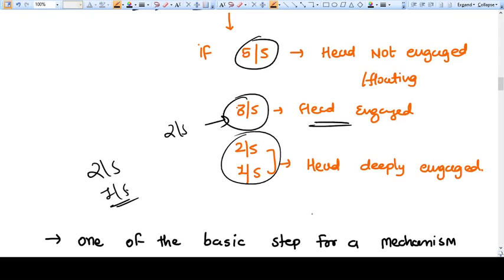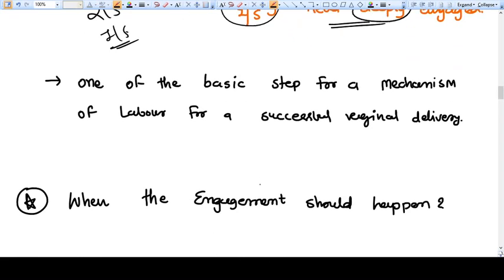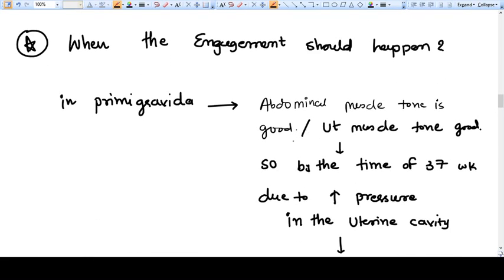One of the basic steps for a mechanism of labor is engagement to predict successful vaginal delivery. Now when should the engagement happen? It's a different thing.